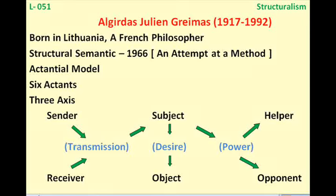Hello friends, this is lesson number 51 in this series of literary criticism and theories. Today we shall discuss A.J. Greimas. His full name is Algirdas Julien Greimas. He was born in Lithuania, later went to France and got French nationality, so we know him as a French linguistic structuralist.